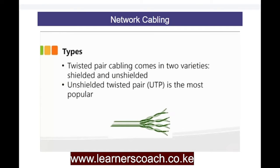The main two types of network cables are the twisted pair cabling, which comes in two varieties: shielded and unshielded twisted pair cable. The UTP, also known as the unshielded twisted pair, is the most popular and common. Every time you see a network cable connecting two computers, most likely it's a UTP cable.